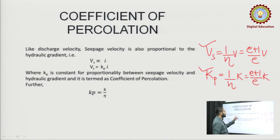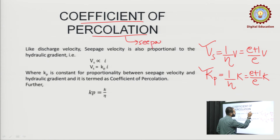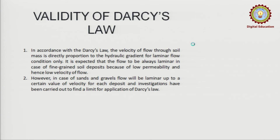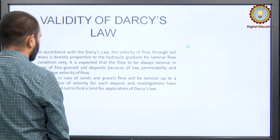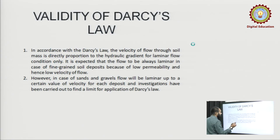Coefficient of percolation Kp is essentially the coefficient of permeability in the case of seepage velocity. Now let us discuss the validity of Darcy's law — we have just described all formulas according to Darcy's law, so let us see when it is valid.